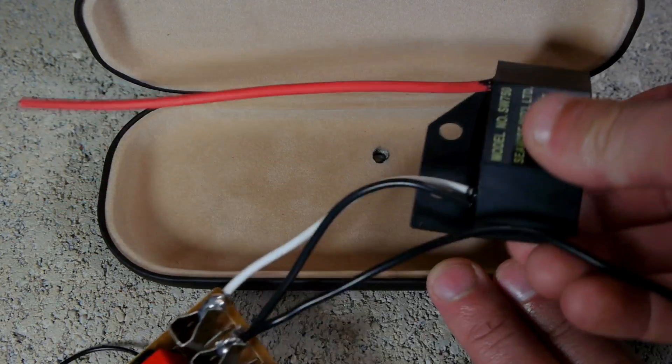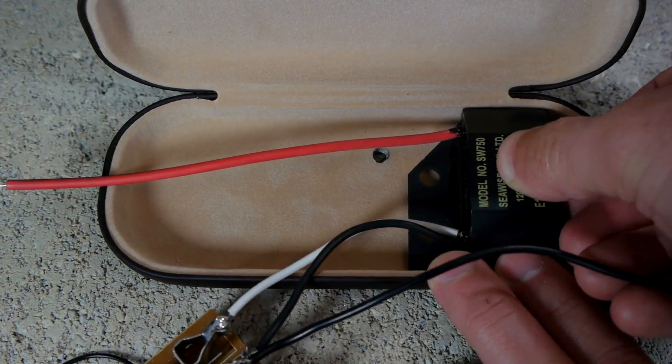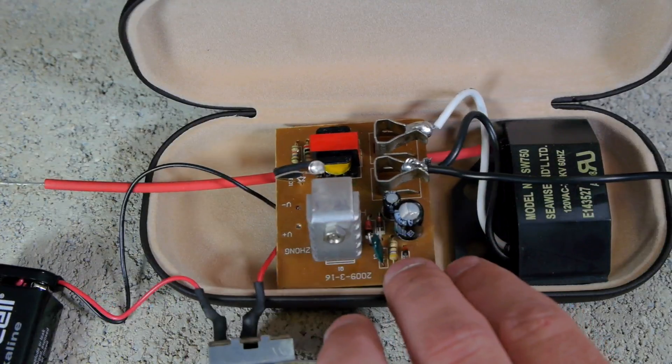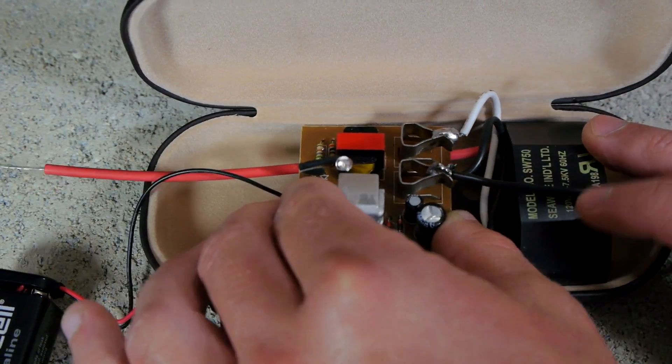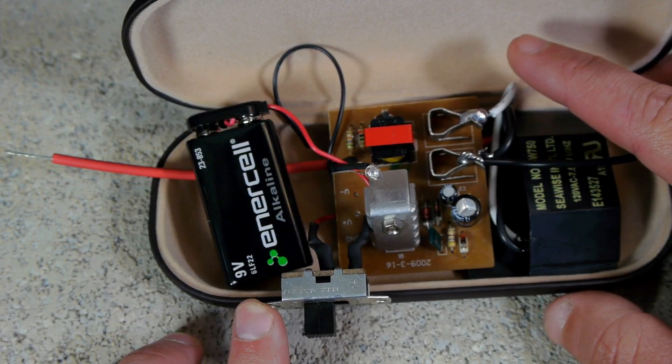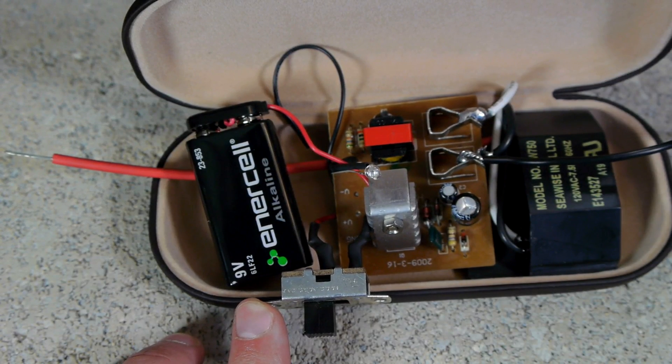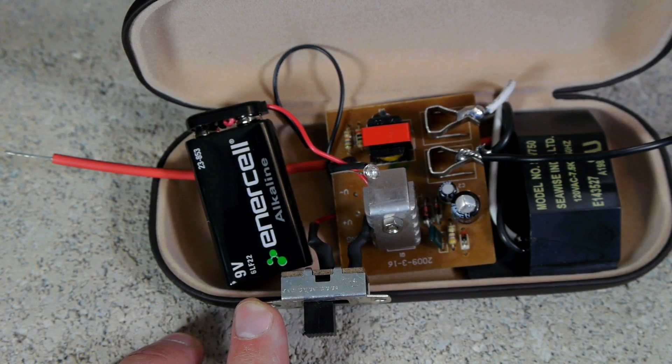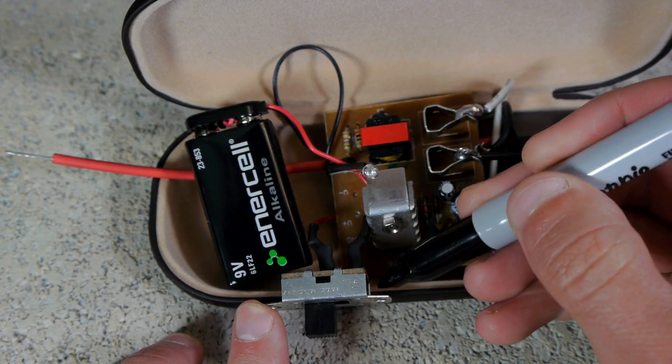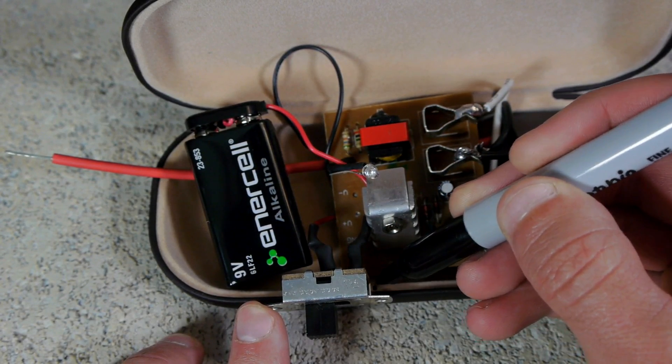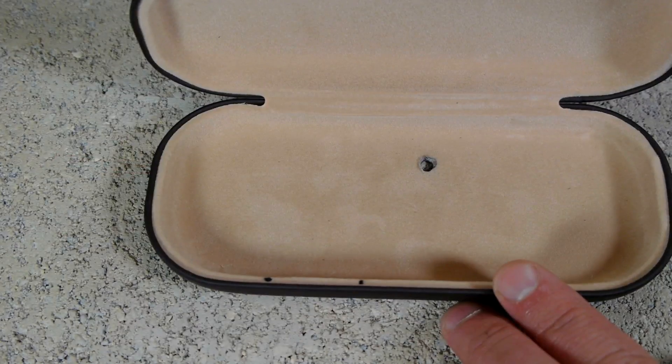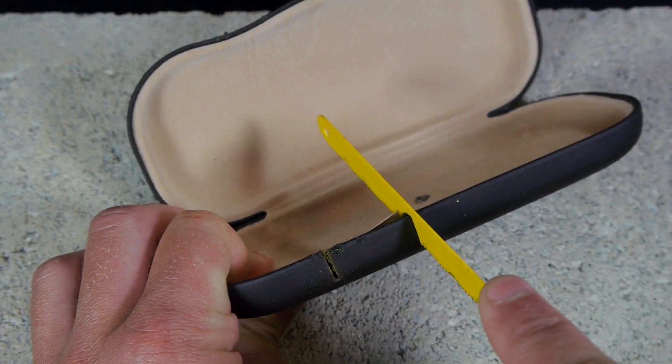The next step will be to position where the on-off switch will be placed, and to do that we will need to insert all the electronics into the glasses case approximately where they're going to fit best in the end. The switch should then be positioned somewhere along the wall of the case where there's going to be the most room on the inside. We once again mark the position, then remove all of the electronics and cut that section out of the wall with a hacksaw blade.